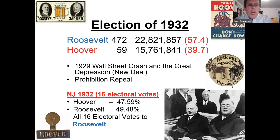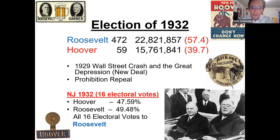One fascinating thing that happened during the period between the election and Roosevelt's inauguration in March of 1933 was an assassination attempt on Roosevelt — he was almost shot, but the shooter's hand was deflected at the last minute and the mayor of Chicago was killed instead, in Florida. After this, they changed the inauguration day from March 5th to January 20th because they wanted to shorten that period where the president-elect was in limbo for a very long time. That's why January 20th is the date.